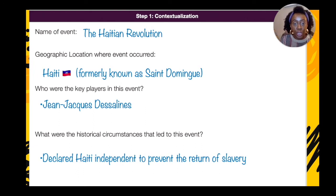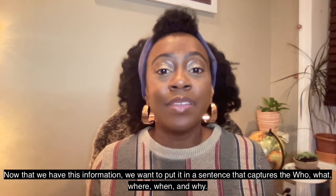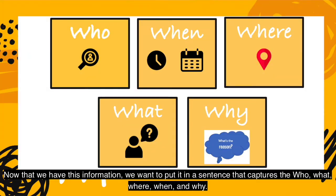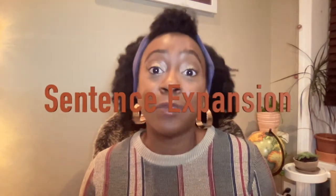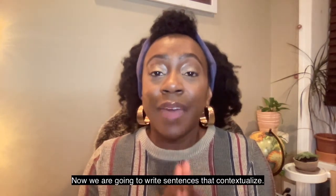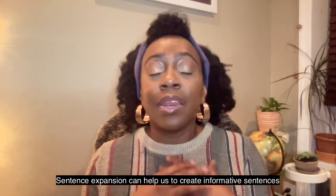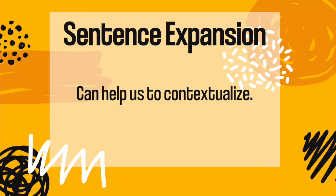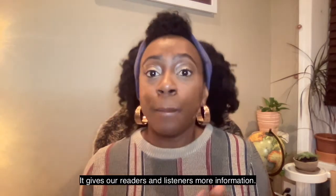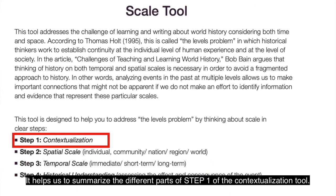Now that we have this information, we want to put it in a sentence that captures the who, what, where, when, and why. We are going to do this with sentence expansion. Sentence expansion can help us create informative sentences that contextualize an event. It gives our readers and listeners more information and helps us summarize the different parts of step one — the contextualization tool.